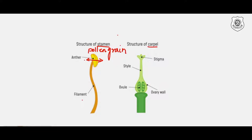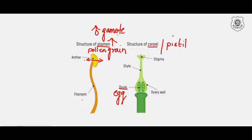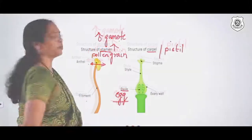Coming to the female part — the carpel, also called the pistil. A pistil or carpel is made up of an ovary at the bottom, a style, and a stigma. Inside the ovary at the bottom is the ovule, and the ovule in turn produces the female gamete — the egg. So pollen grains give rise to male gametes, and the egg is inside the ovule.